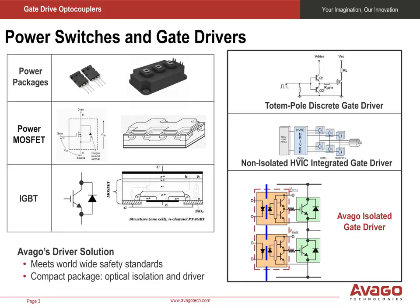Power MOSFETs and IGBTs play very important roles in motor inverters, uninterruptible power supplies, switch mode power supplies, and battery chargers. Power MOSFETs have been used much longer than IGBTs. Compared to IGBTs, power MOSFETs generally have a faster turn-on time, but because of their higher internal resistance, they also have higher conduction losses.